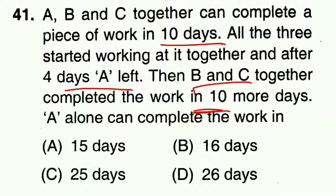First question. A, B and C together can complete a piece of work in 10 days. All three started working together, and after 4 days A left. Then B and C together completed the work in 10 more days. A alone can complete the work in how many days?